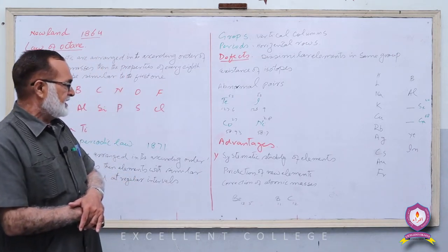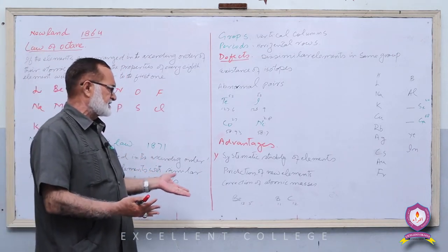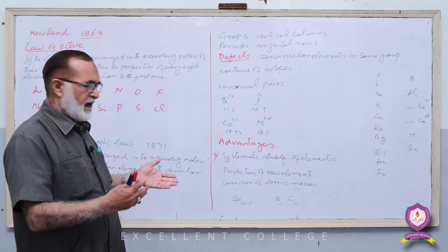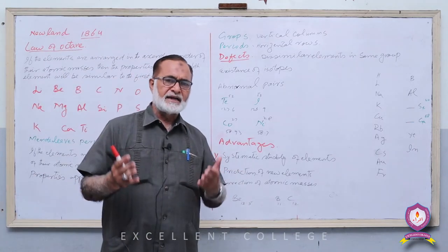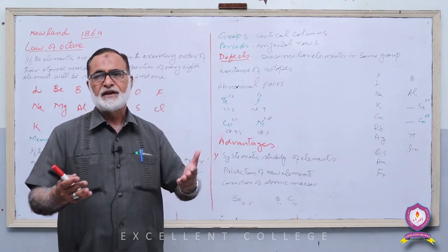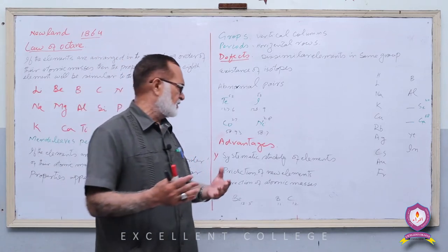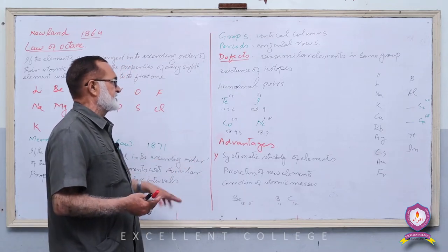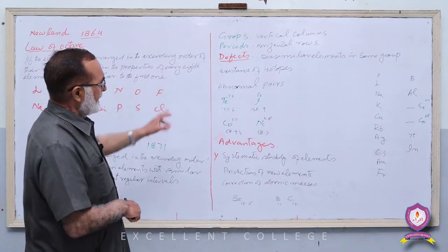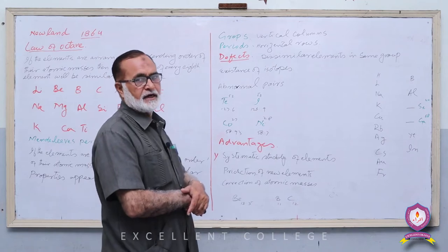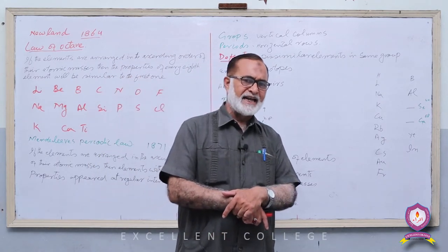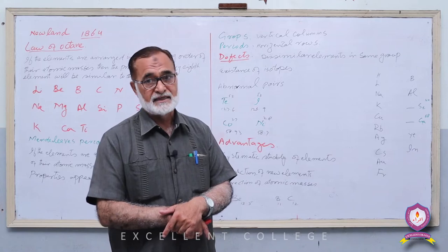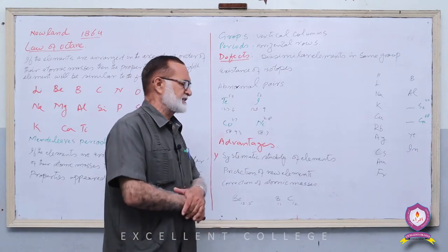ہم نے چند advantages کا ذکر کیا — اس کے علاوہ اور بھی ہیں لیکن course میں زیادہ تفصیل نہیں ہے۔ اب ہم دیکھتے ہیں defects in Mendeleev's Periodic Table — اس کے نقائص کیا تھے، اس میں کون سے defects پائے جاتے تھے۔